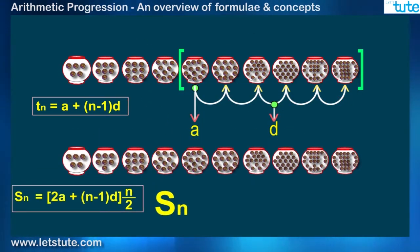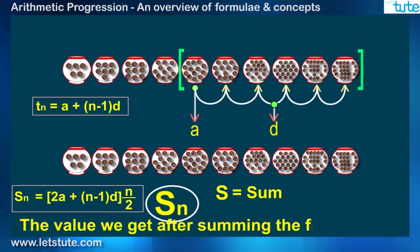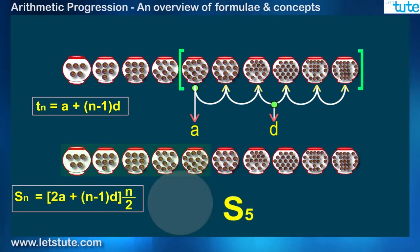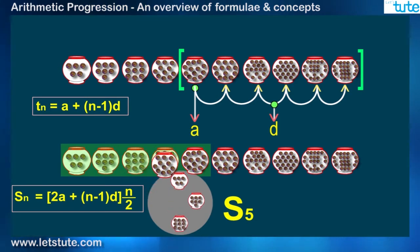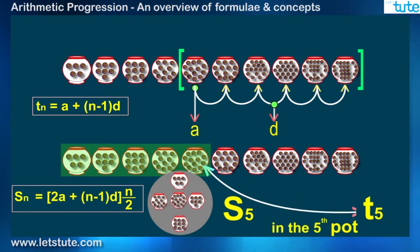Regarding Sn, here S means sum and Sn means the value we get after summing the first n terms. In our case, it is the sum of the marbles in the first n pots. If I say S5, it is the total number of marbles in the first 5 pots, whereas T5 is the number of marbles only in the 5th pot.